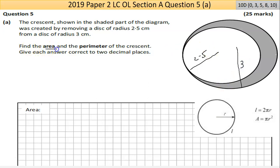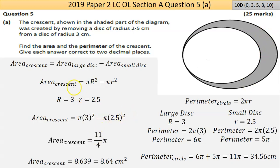It says find the area and perimeter of the crescent. Give your answer correct to two decimal places. So if we get the area of the big shape, it's a circle, so area equals πr². I've taken this from the maths tables. So it's 3² times π take away 2.5² times π and you get the difference, and that's the shaded part.